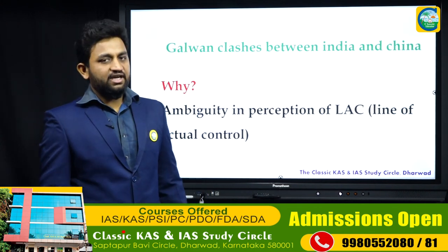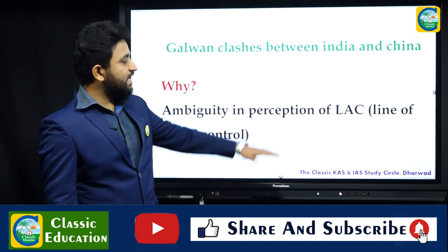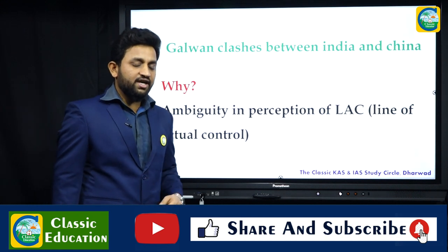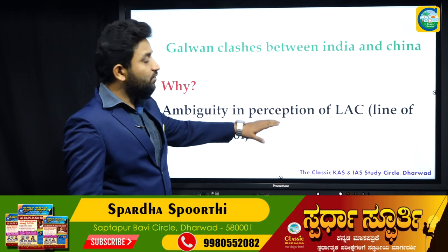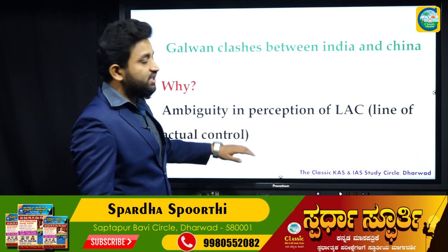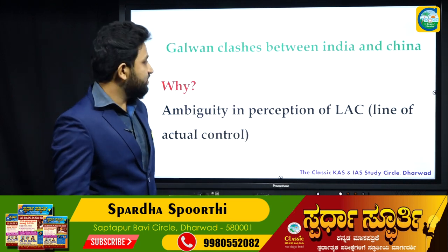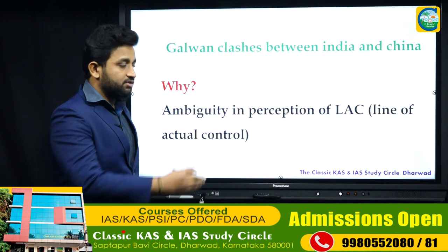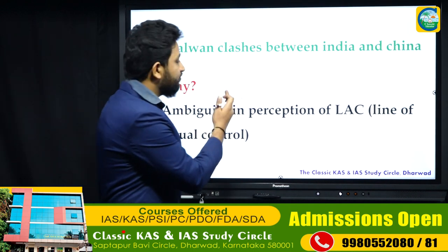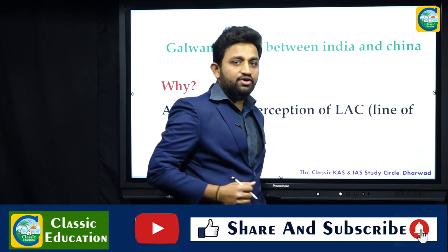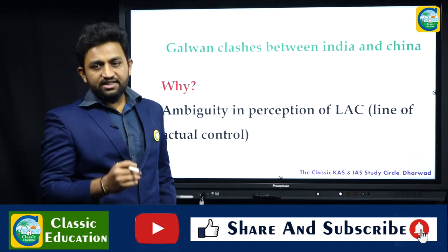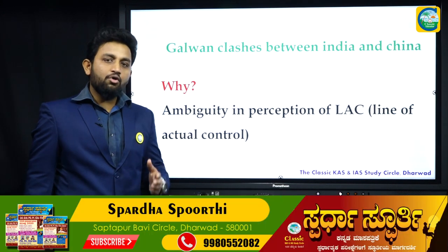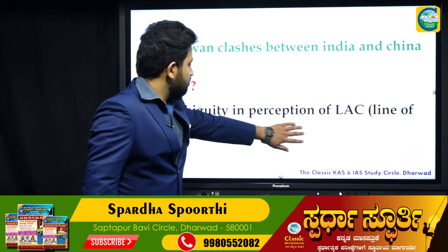Why are there frequent clashes between India and China? We have a LAC — Line of Actual Control — that demarcates the Indian-administered territory and the Chinese-administered territory, yet we see repeated incursions from both sides. To understand this, we have to understand the demarcation. There is ambiguity in the perception of LAC; the Chinese perception of LAC is different from India's perception of LAC.